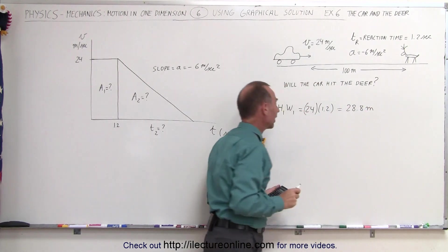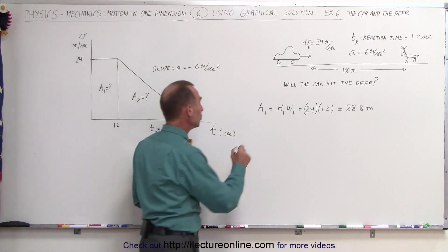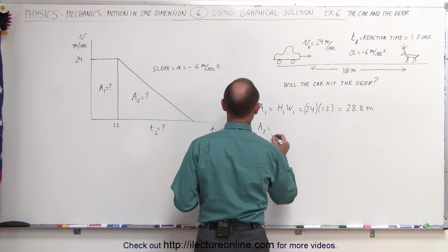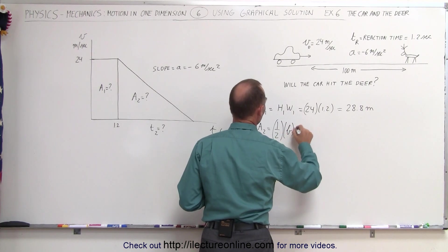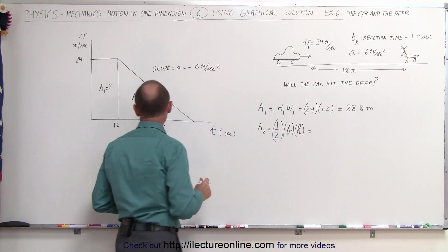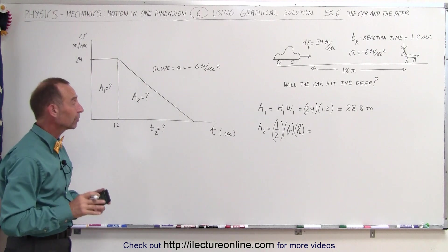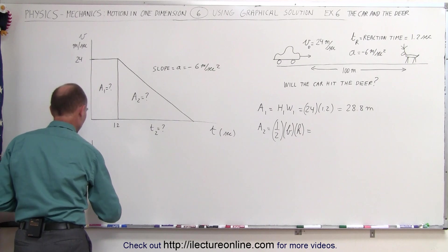In the first 1.2 seconds, the car travels 28.8 meters. a2 is the distance traveled while the car is slowing down—that's a triangle, so it's one-half times the base times the height. But we don't know what the time is, so we don't know the length of the base. We can graph an acceleration versus time graph.